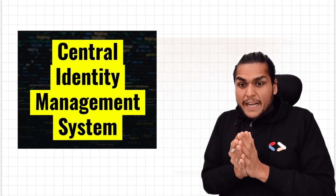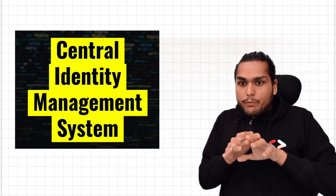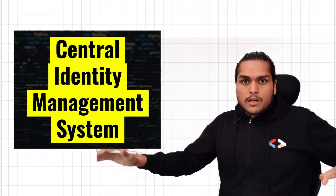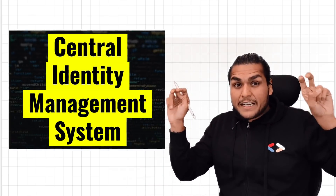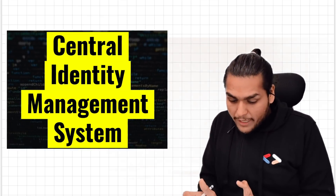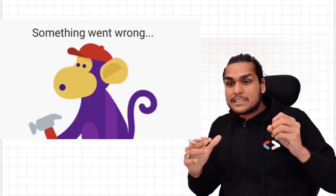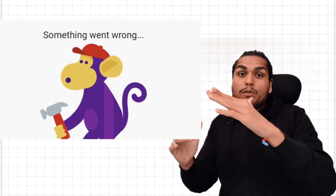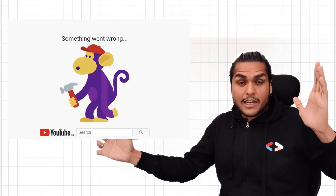Let's dive deep and understand what this system is and why it created such a big outage — how everything went down. It is because of the Central Identity Management System. Let's see how things work behind the scenes, and then we'll understand why you were getting all these errors and such a large-scale outage happened.